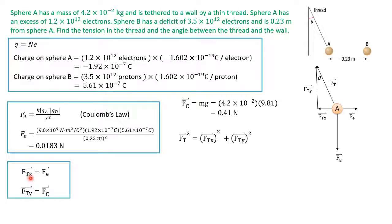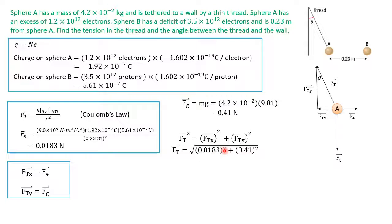Because FTX equals FE and FTY equals FG, we can now find the tension force in the thread. We use Pythagoras: we square the horizontal and vertical components of tension, add them together, and take the square root to get the tension force. This gives us 0.41 Newtons for the tension force.